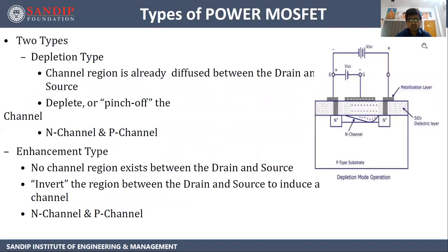Next are the types of power MOSFET. There are two types: one is depletion type and another one is enhancement type. In depletion type, you can see in the structure there are two N+ layers and in between there is a channel. Initially the channel exists, and as we bias it and increase the voltage, this channel reduces — it gets depleted. So the name is depletion mode power MOSFET.